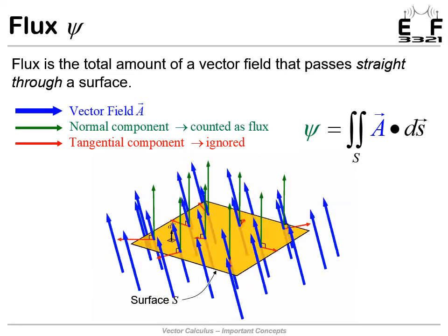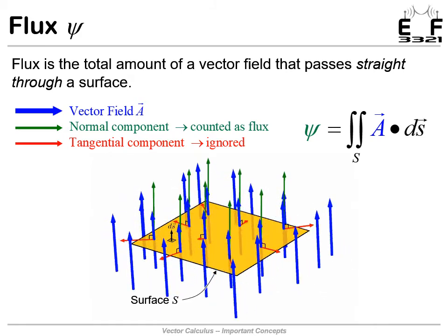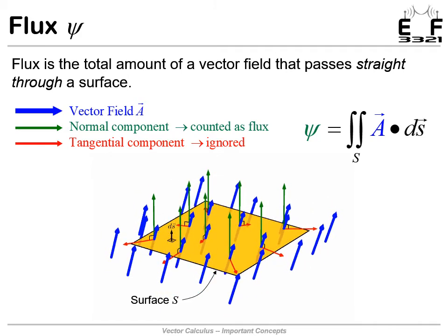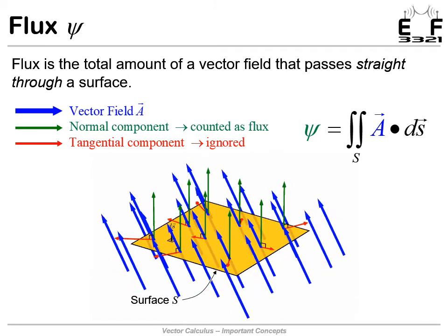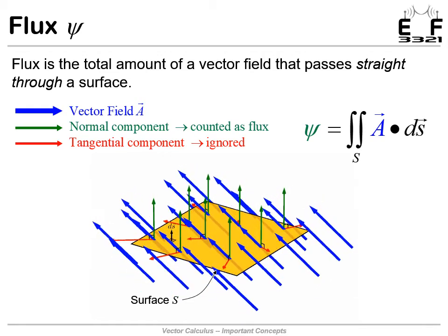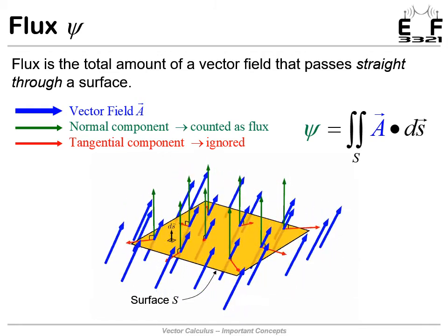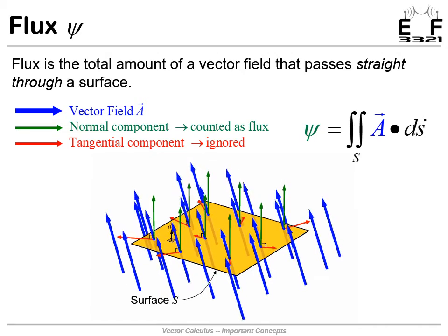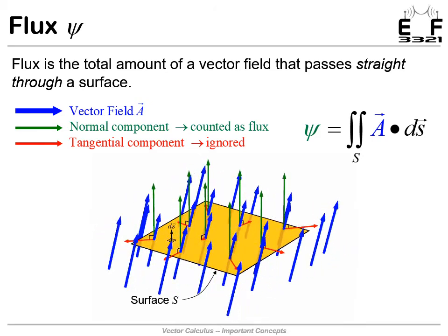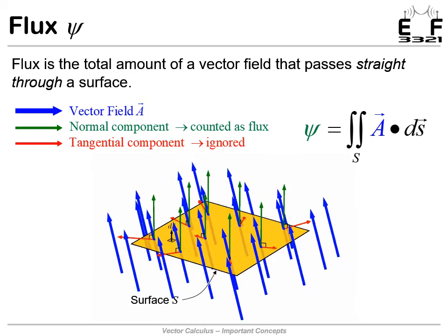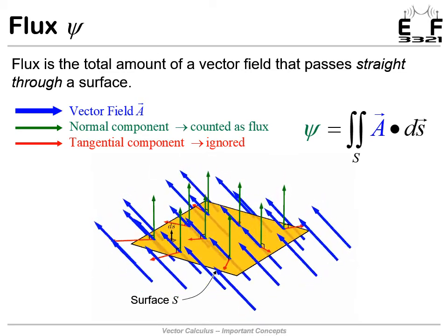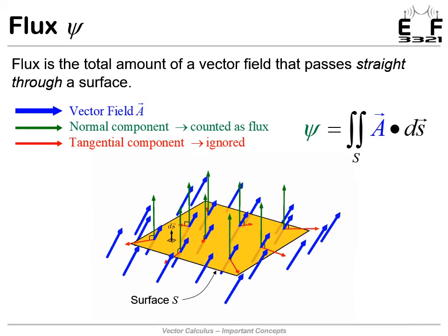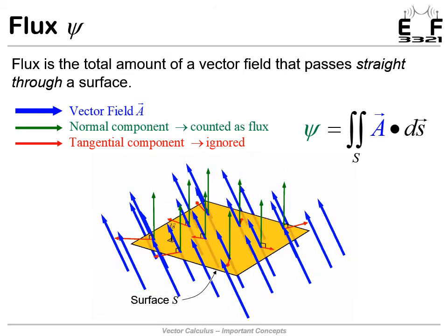The transverse components of the blue arrows I'm showing here as the red arrows, that part gets completely ignored by the flux calculation. So it's possible to have zero flux and still have a strong field. That field might be parallel to the surface. If the field is punching straight through the surface, that's when we have maximum flux. Flux is adding up the field, but just the component of the field that's punching straight through the surface.